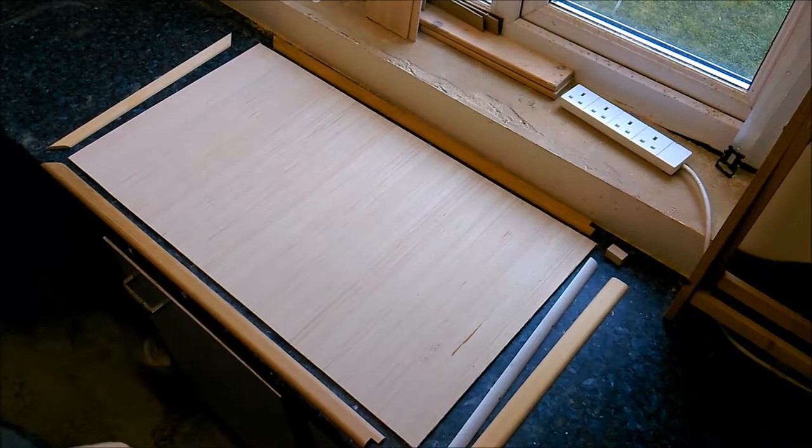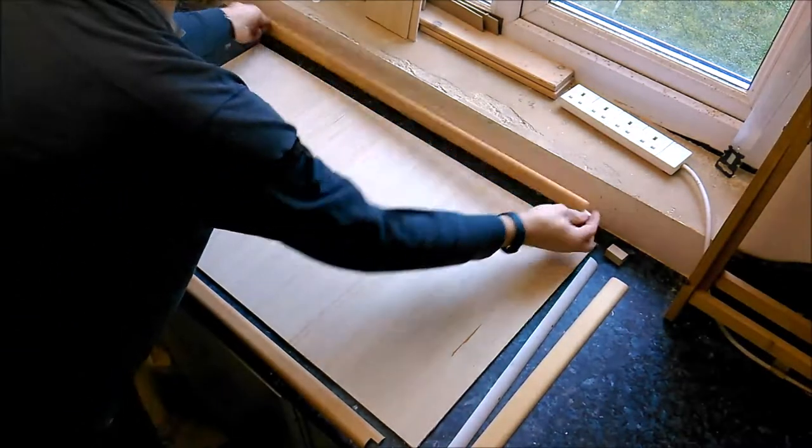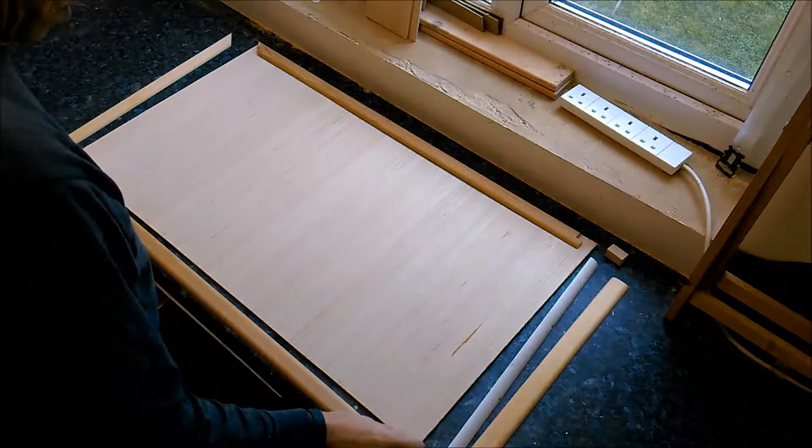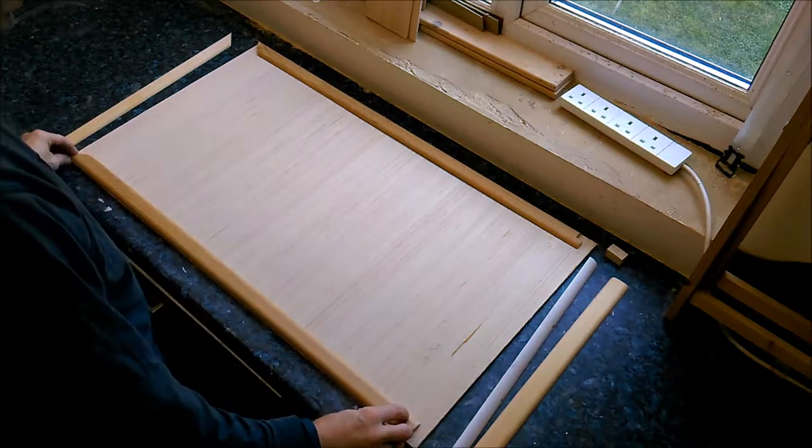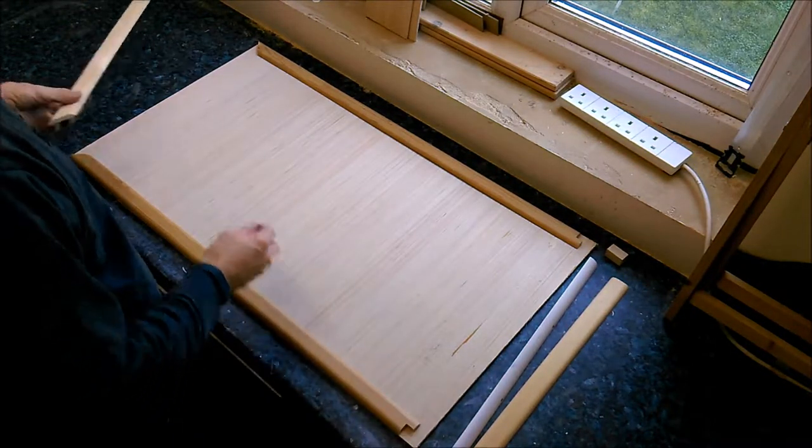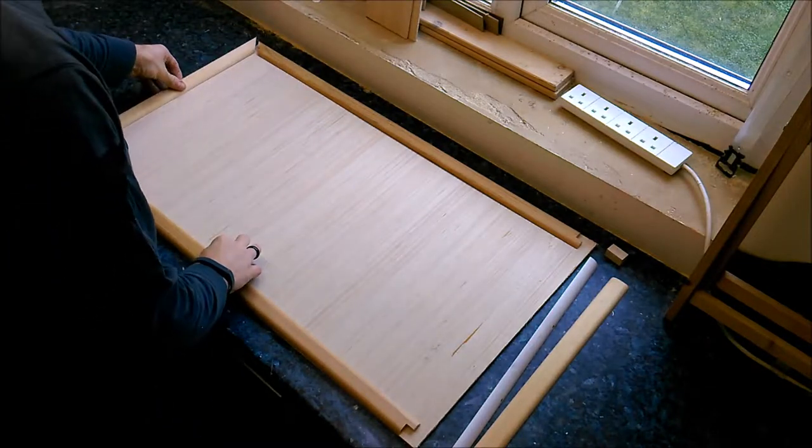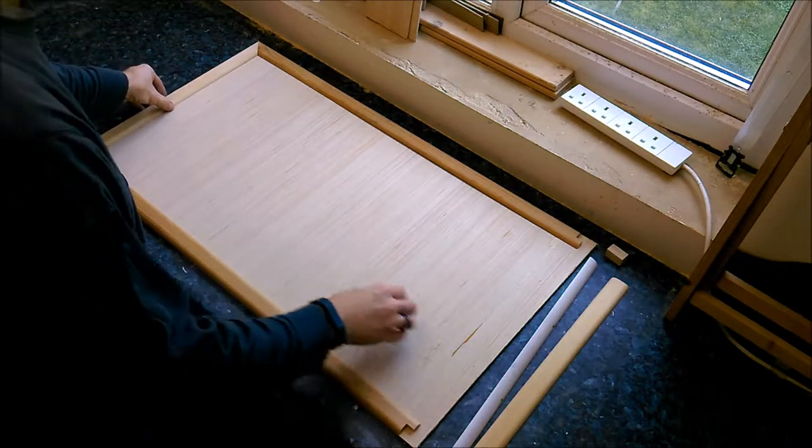To make this blackboard, we take two lengths of double round beading for the sides, and another piece mitered at 45 degrees for the top.